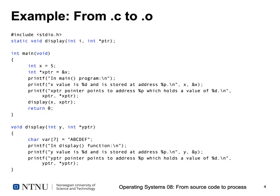Let's first look at an example going from a C file to a single binary object file. We have a C file that includes a header file, has a prototype for some external function to display something, and a main function with some local variables. Main prints some values and calls display. Display is implemented below — it was prototyped up top and can print some information to the screen.